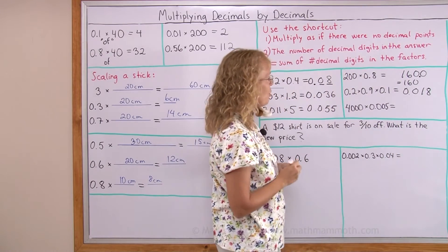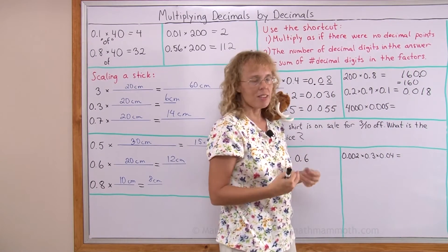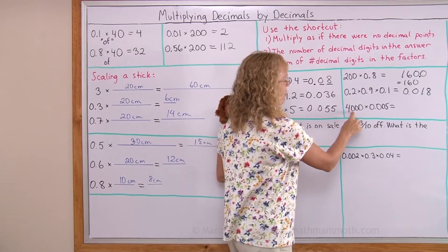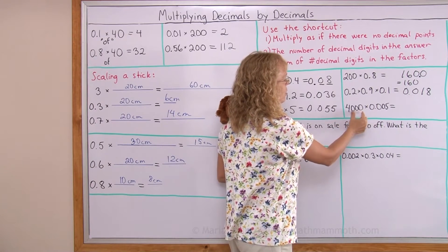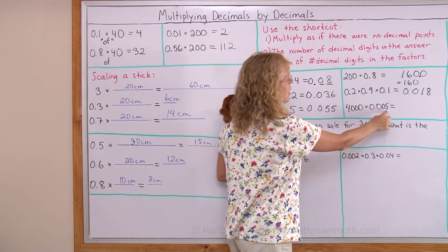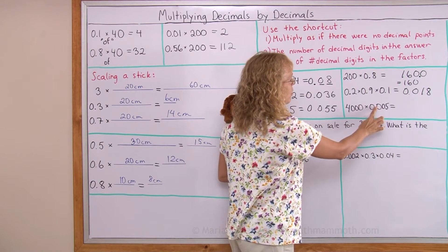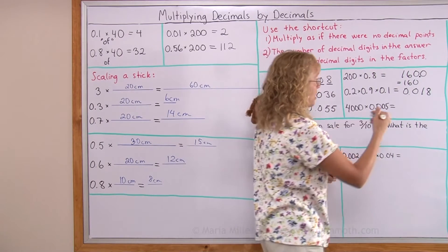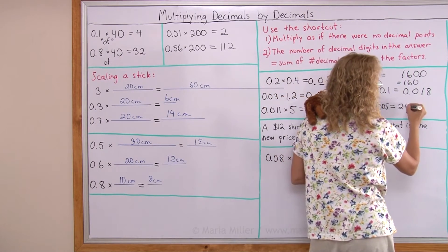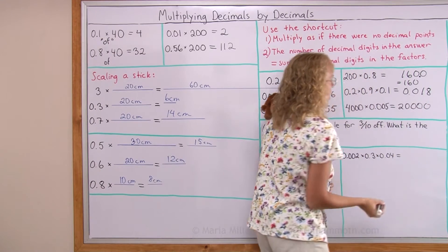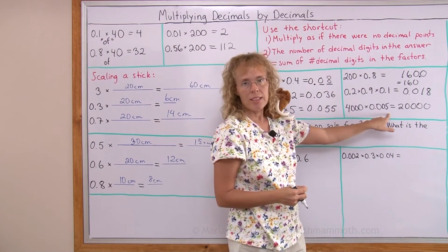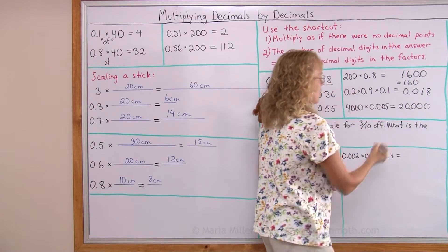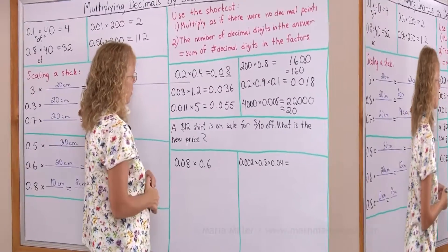And here four thousand times five thousandths. So I will go four thousand times five. Okay? I won't omit these zeros from this number. It is just that this number I treat as if there was no decimal point. It would be just plain five. But this is still four thousand times five, twenty thousand. Okay? Now the decimal point. Three decimal digits here. None there. Total three. So over here. So this is basically just twenty.